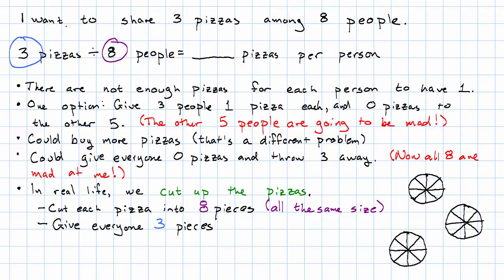We cut each one into 8 equal pieces. And then, the simplest way to imagine giving everyone 3 pieces is, we give everyone a piece of the first pizza, a piece of the second pizza, and a piece of the third pizza. How do we describe this number then?